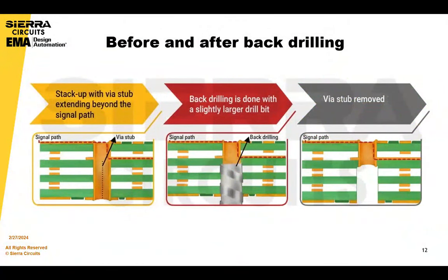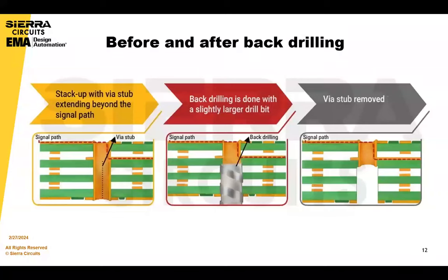This is before and after for back drilling. Here you have on the left an example of the via stub — a drill hole with plating in the via. Then the back drill happens, and there's the pigtail situation that Steve Carney was talking about in terms of removing the stub. This is basically the before and after of back drilling.